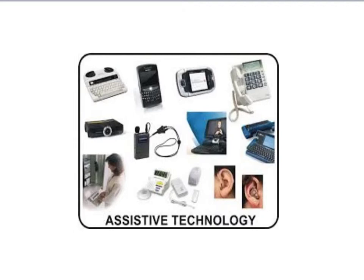Assistive technology is the name given to assistive, adaptive, and rehabilitative devices for people with disabilities. It also includes the process used in selecting, locating, and using them. Assistive technology promotes greater independence by enabling people to perform tasks they were formerly unable to accomplish or had great difficulty accomplishing. Examples of assistive technology include hearing aids, specially adapted keyboards and phones, and telephones with large number pads.